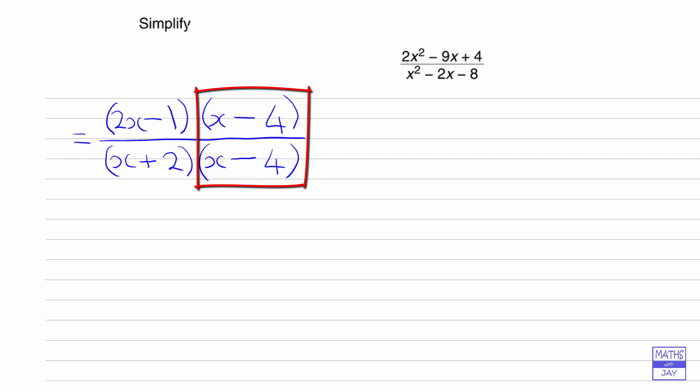We have indeed got two brackets that are the same, so we can divide top and bottom of the fraction by x minus 4, leaving us with 2x minus 1 in the numerator and x plus 2 in the denominator.